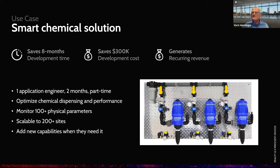A quick use case: a large chemical dispensing company wanted to monitor a hundred physical parameters at their customers and scale their solution to 200 sites. A partner application engineer was able to develop the entire solution in two months on a part-time basis, saving this chemical company eight months of development time and $300,000 in development cost. Because of that savings of development time, they were able to get to market much sooner and generate recurring revenue on a much faster basis.